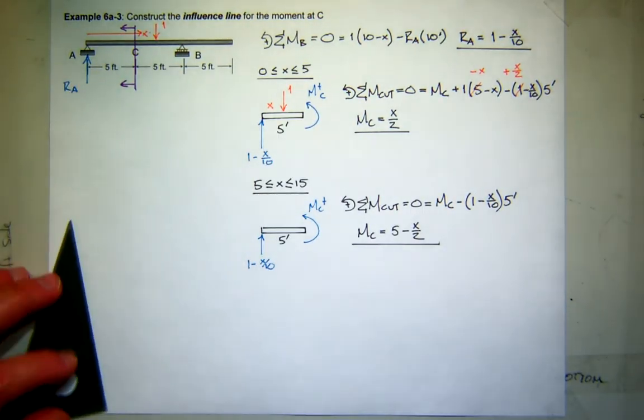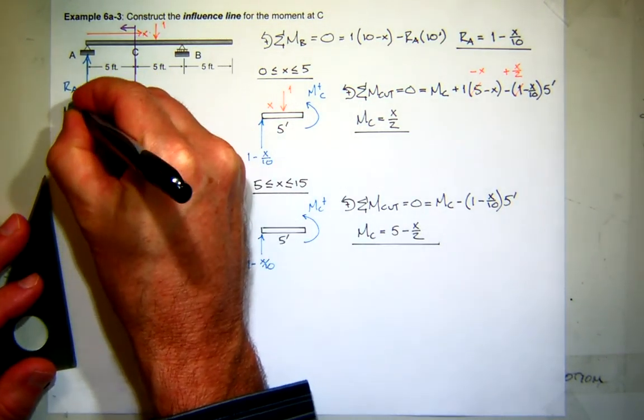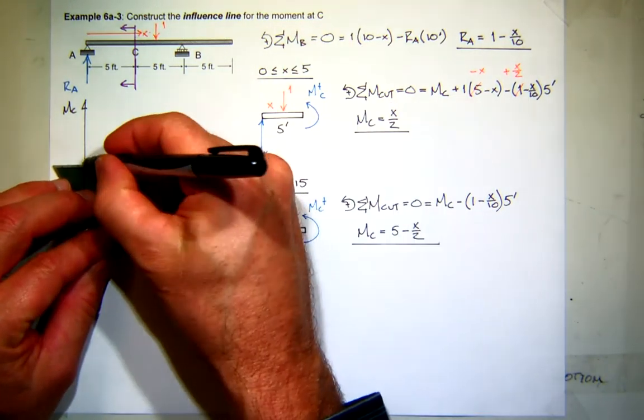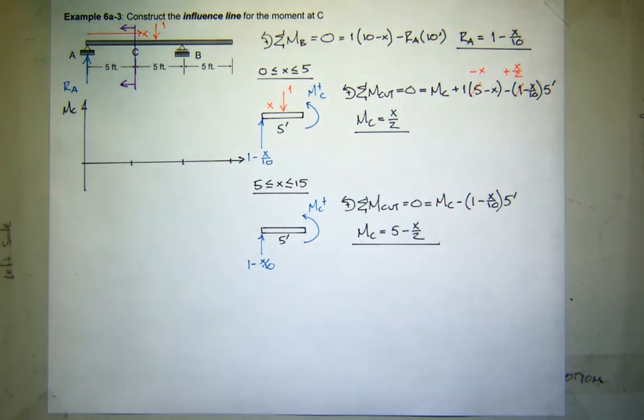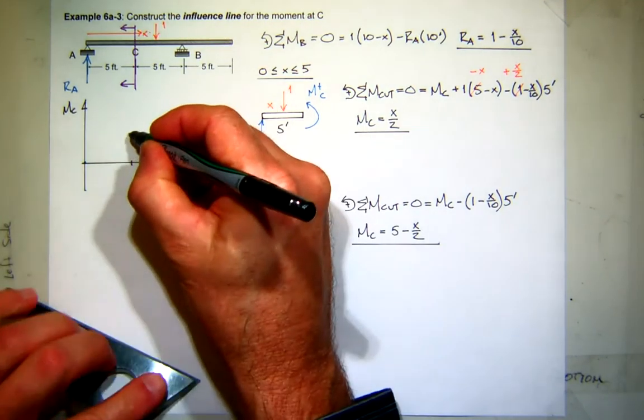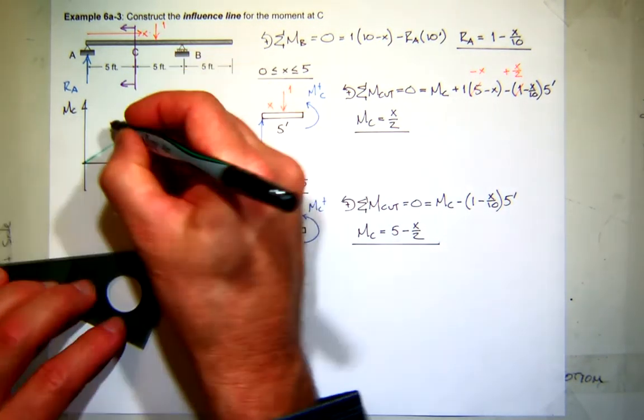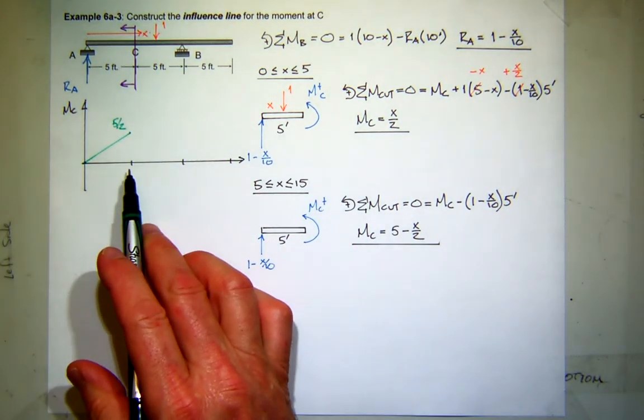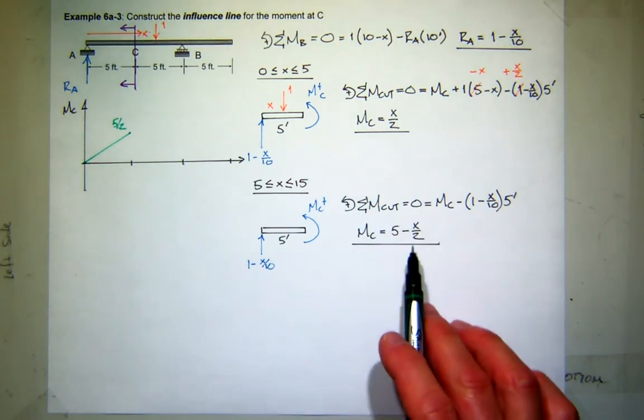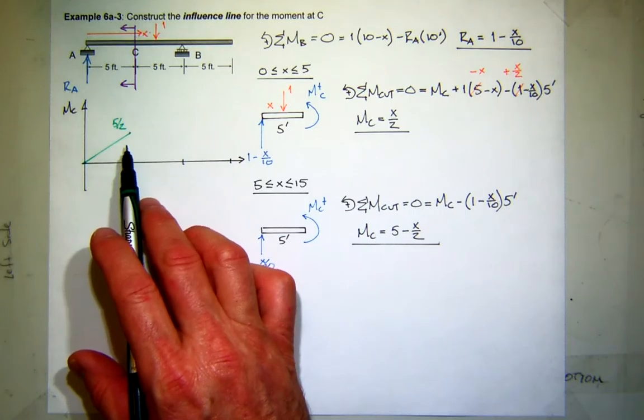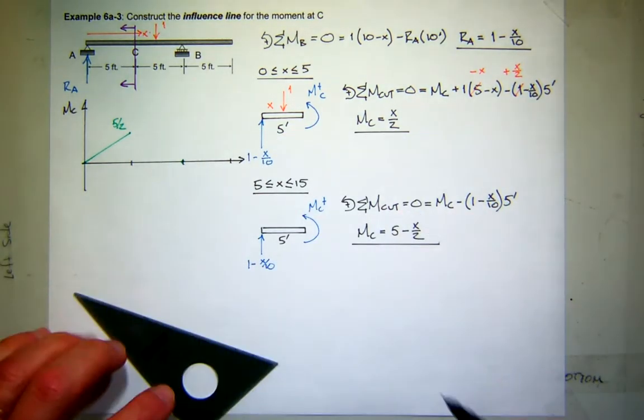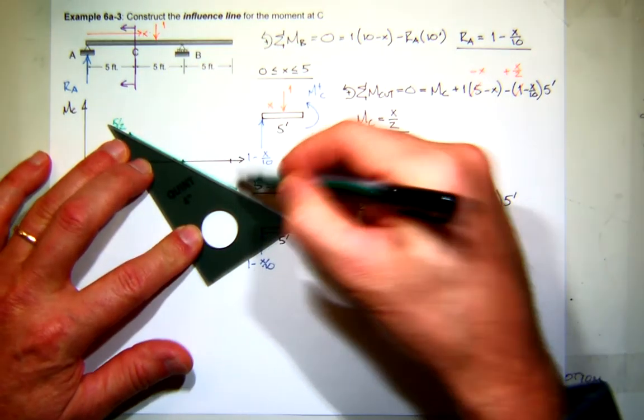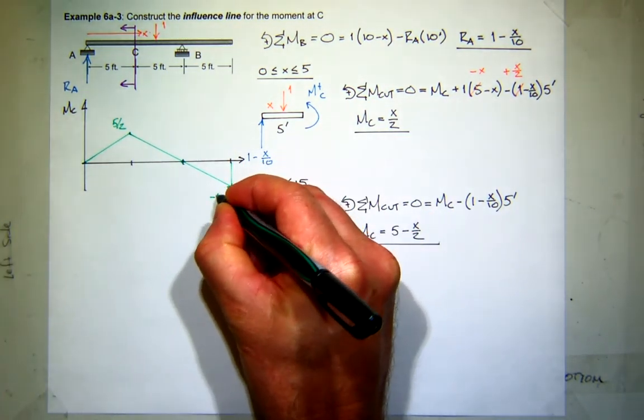So now if I plot that, let's see what it looks like. So I want the moment at C for this structure. I'll go ahead and mark off these important points. So from 0 to 5, I have a value of x over 2. So I know at 0, at 0 and at 5, it would have a value of 5 over 2. Now from 5 to 15, I have to plot this equation. So I plug in x equal 5 here and you get 5 minus 5 over 2. You get 5 over 2. So that means it matches it should. And as I move to the right, at x equal 10, I get 0. And at x equal 15, I get... Oh, I overstayed my welcome there a bit. I get minus 5 over 2.